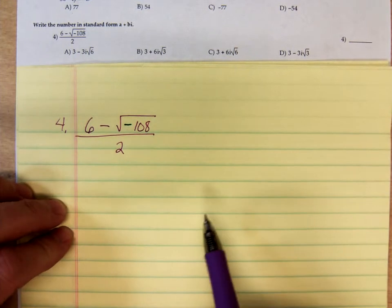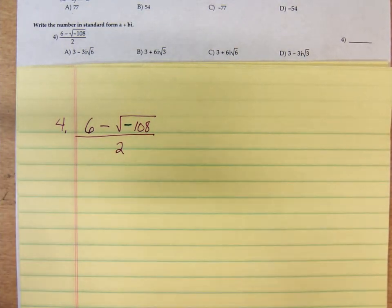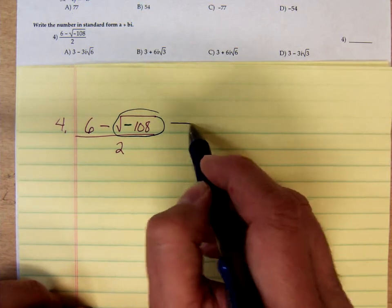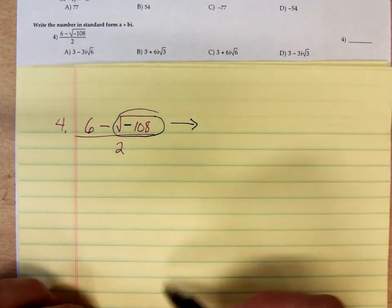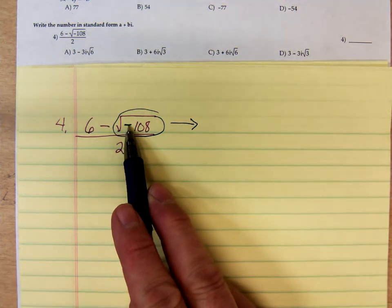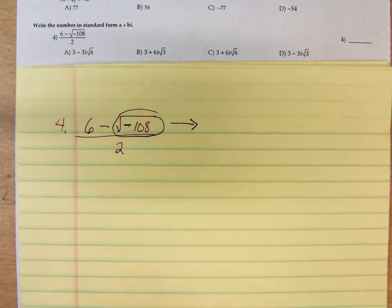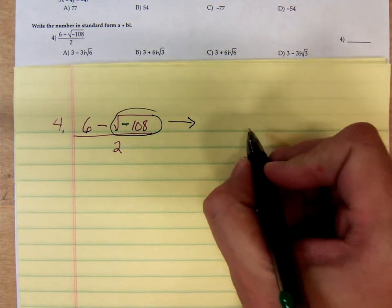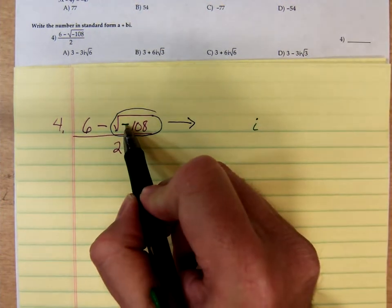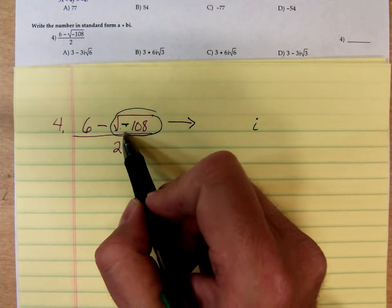We need to simplify that square root of negative 108. Since it's the square root of a negative number, that means we have an imaginary number. So I'll go ahead and write a green i there because of that green square. The negative under the square root is green.